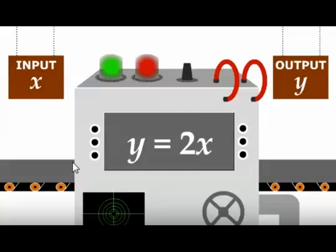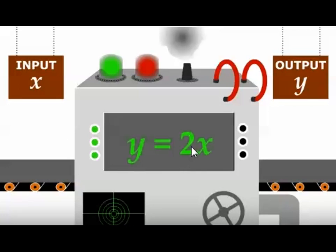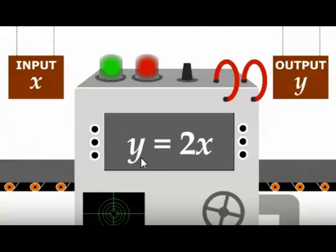A function is like a machine. For every input or x value that goes into the machine, there can be only one output or y value. For example, this machine takes every element of the domain — the input — multiplies it by two, and produces exactly one y value. One goes in, gets multiplied by two, and only two can come out. Seven goes in, gets multiplied by two, and only fourteen can come out.